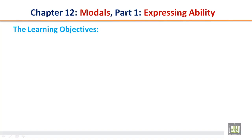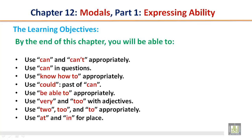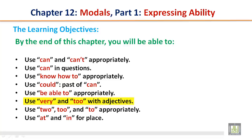The Learning Objectives. By the end of this chapter, you will be able to use can and can't appropriately. Can't is a contraction of cannot. Use can in questions. Use know-how-to appropriately. Use could, the past of can. Use be able to appropriately. Use very and too with adjectives. Use to — the number, in addition, and as a preposition — appropriately. Use at and in for place.